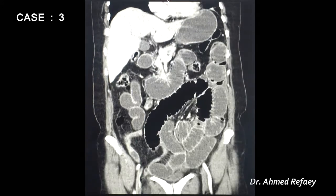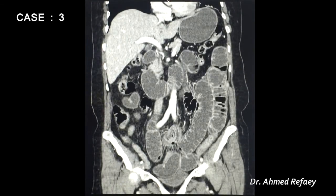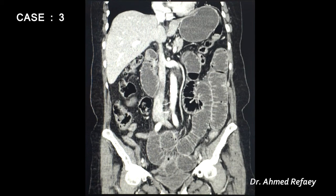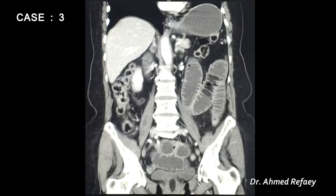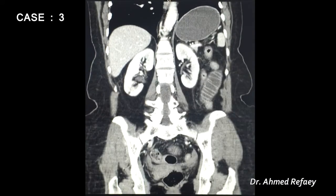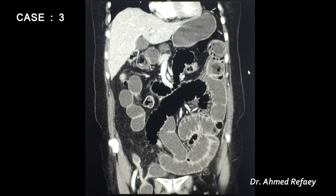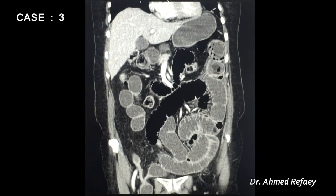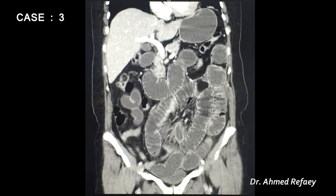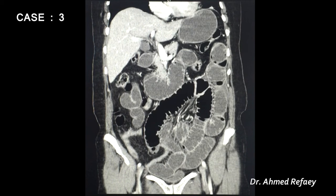Coronal reconstruction images for the same patient again show marked dilatation of the small bowel filled with fluid, with valvulae conniventes leading down to the right femoral hernia region. The transition zone is clearly visible between the proximal dilated small bowel loop and the collapsed distal ileal loops. This confirms small bowel obstruction due to right femoral hernia.